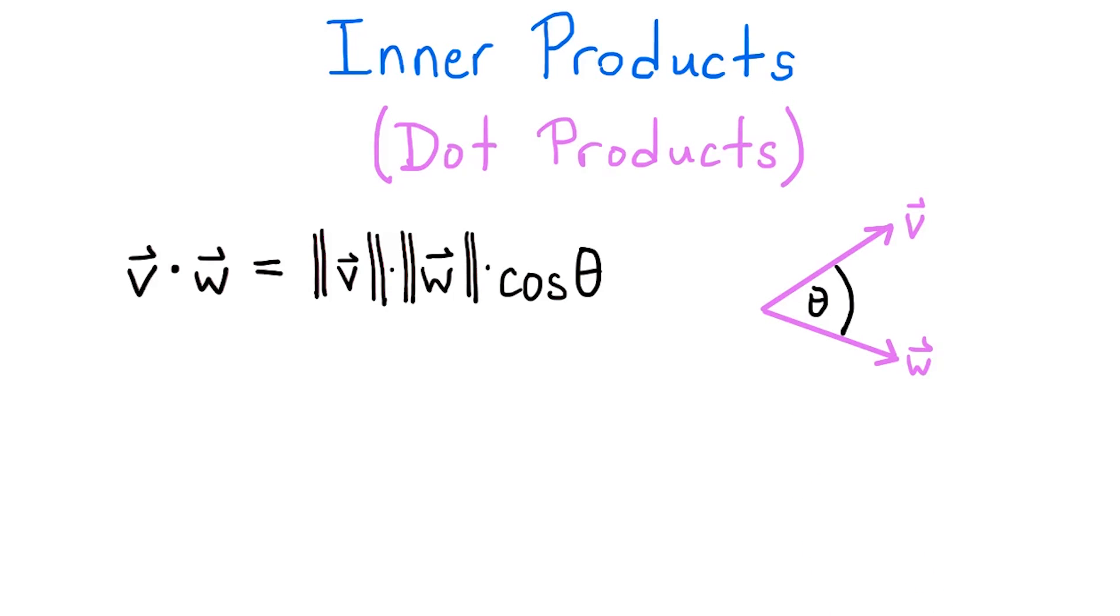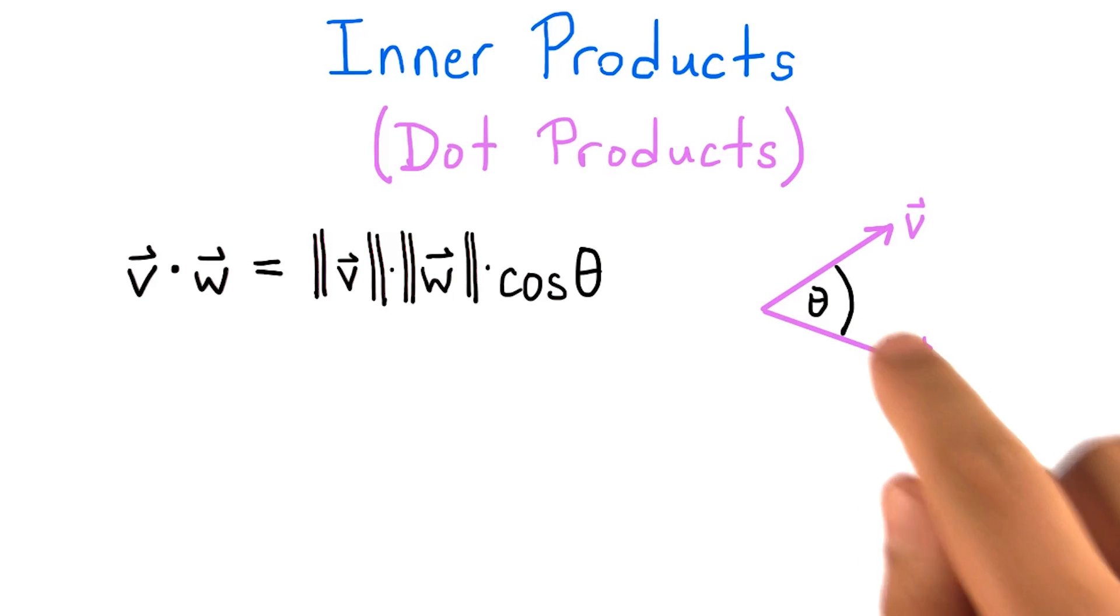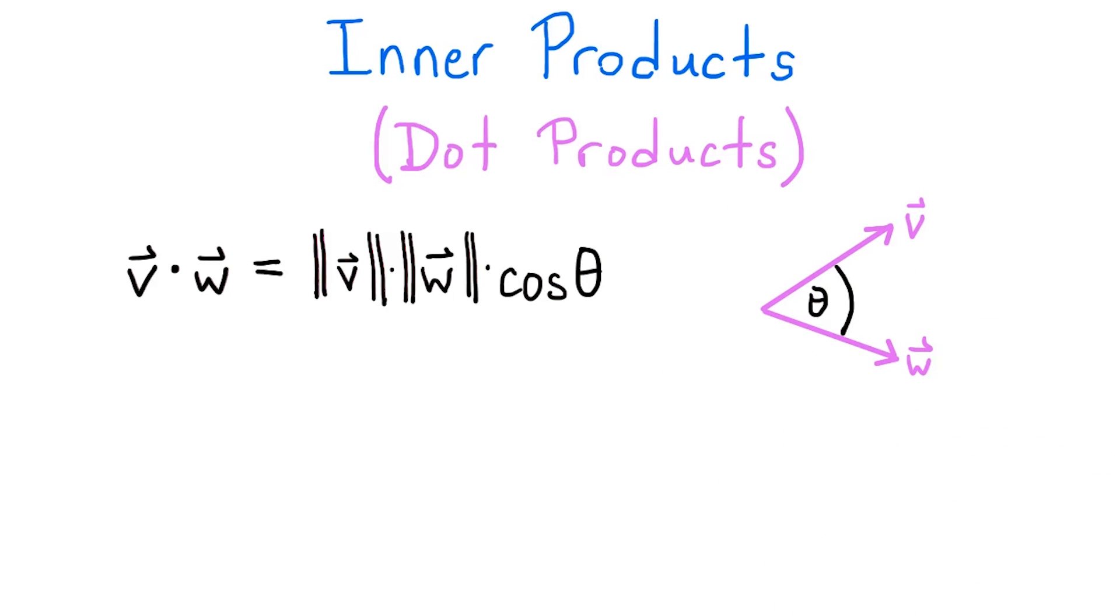Technically, there are two angles between the vectors, a shorter one and a longer one. We always use the shorter one by convention.